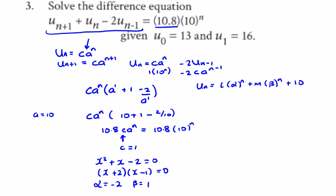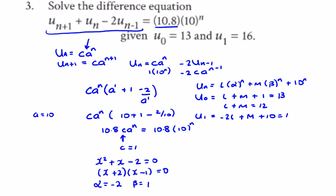Using initial condition u_0 = 13: l + m + 1 = 13, so l + m = 12. For u_1 = 16: l times α (which is −2) gives −2l, plus m times β (which is 1) gives m, plus 10^1 = 10, equals 16. So −2l + m = 6.